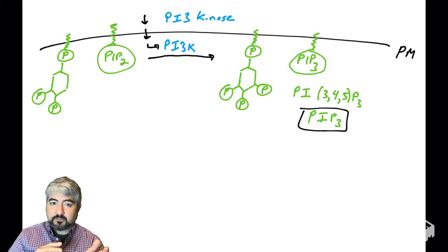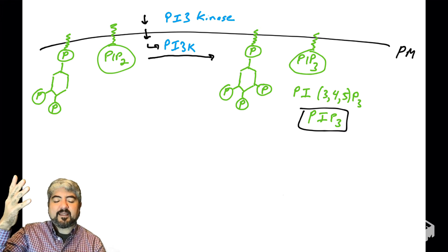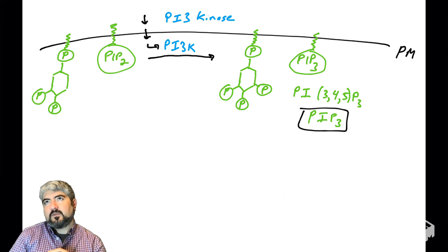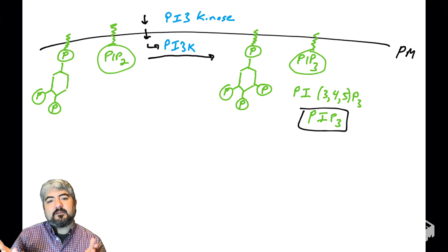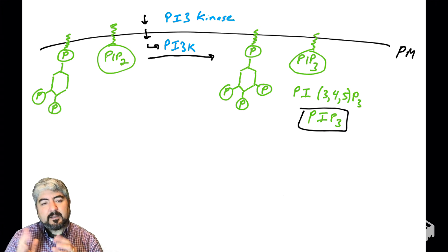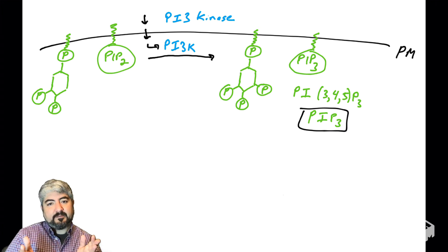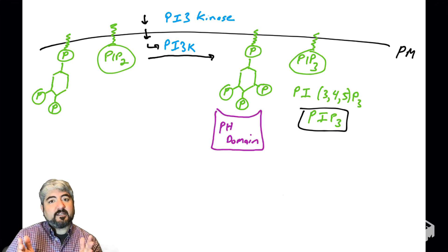PIP2 had two phosphates on the inositol sugar — actually three phosphates total, since there was a phosphate at the 1-prime hydroxyl — but PIP2 had sort of two phosphates at the bottom. Now PIP3 has three phosphates on those hydroxyls. So PIP2 is converted into PIP3 by PI3 kinase, and PIP3 is a very important signaling molecule.